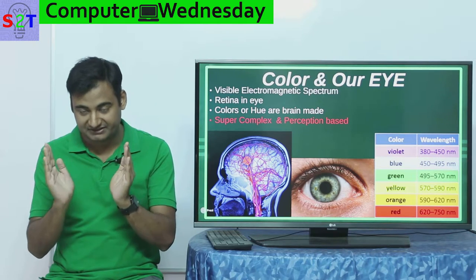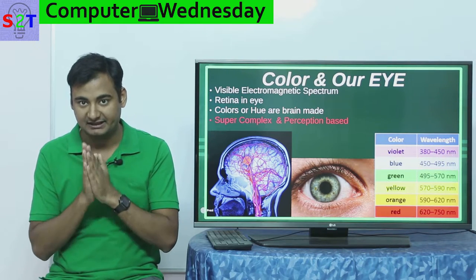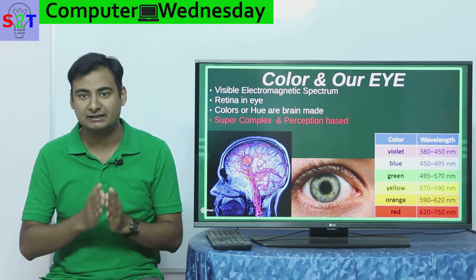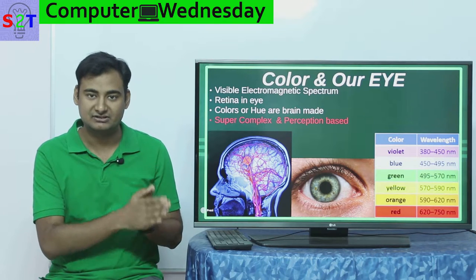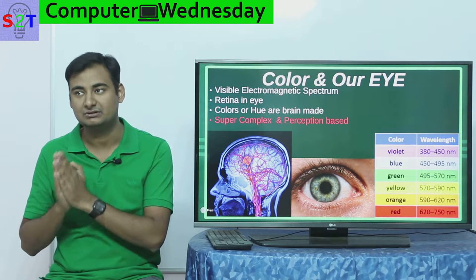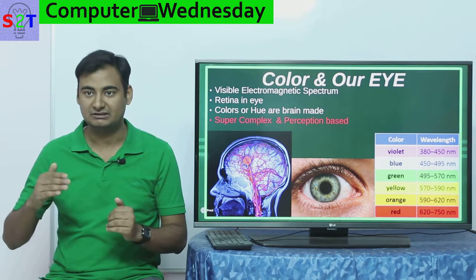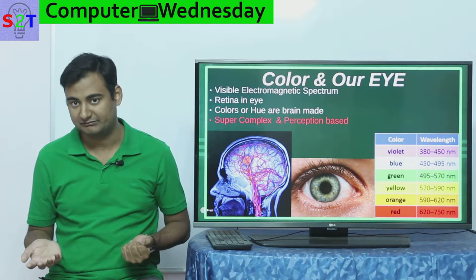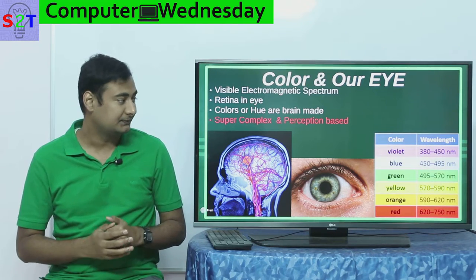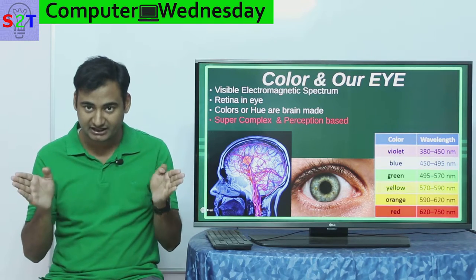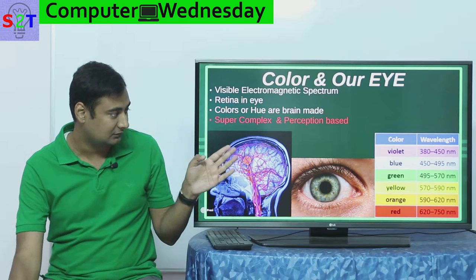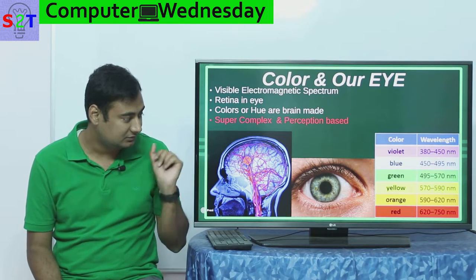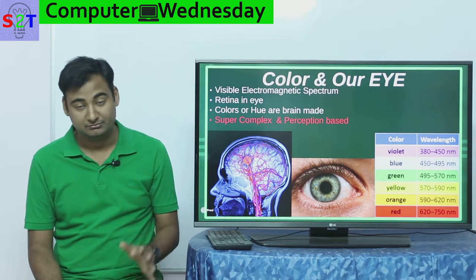That visible range is what we can see. It's similar to how your hearing can only hear from a certain low frequency to a certain high frequency — it can't hear ultrasound nor infrasound. So that range is from 380 nanometers to 750 nanometers.